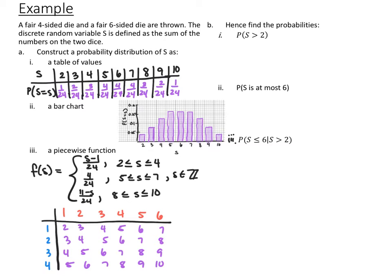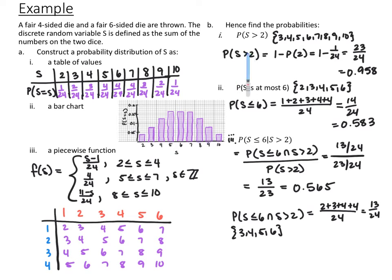Using this distribution, find three probabilities. The probability S > 2 covers values 3–10, so it's 1 minus P(S = 2) = 1 − 1/24 = 23/24, or 0.958. The probability that S is at most 6 covers values 2–6, so adding those probabilities gives 14/24, or 0.583.